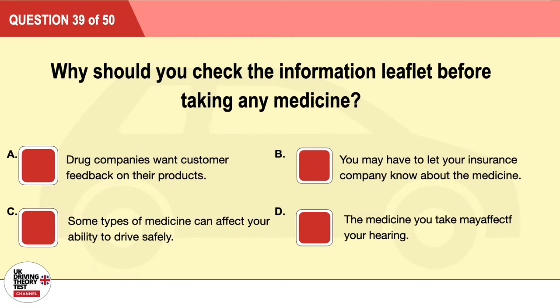Question 39: Why should you check the information leaflet before taking any medicine? A: Drug companies want customer feedback on their products. B: You may have to let your insurance company know about the medicine. C: Some types of medicine can affect your ability to drive safely. D: The medicine you take may affect your hearing. The correct answer is C: some types of medicine can affect your ability to drive safely.